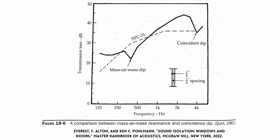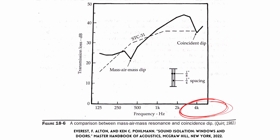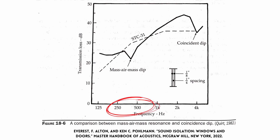Looking at figure 18-6 from the Master Handbook of Acoustics: with an eighth inch pane of glass on the outside and an eighth inch pane on the inside with only a quarter inch spacing, this creates a coincidence dip at 4k, or 4,000 hertz — meaning that frequency is let in more readily than nearby frequencies. You can also see on this graph a mass air mass dip at around 400 hertz. So this window has issues both at the coincidence frequency and at the mass air mass resonance frequency.